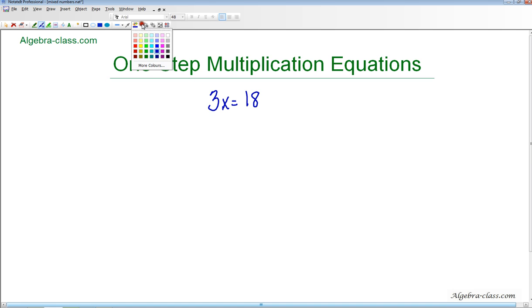In this problem, we have 3 times x. We know that it's 3 times x because there's no symbol between the 3 and the x. And that means that this 3, it's called a coefficient. It's the coefficient of x, but what it means is that we're multiplying 3 times x.